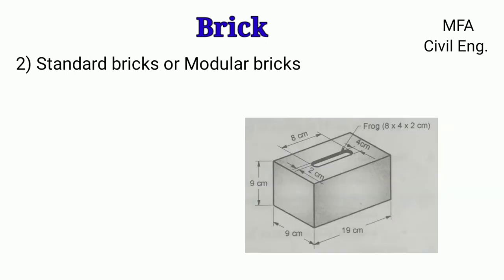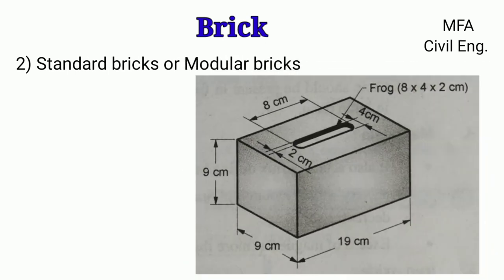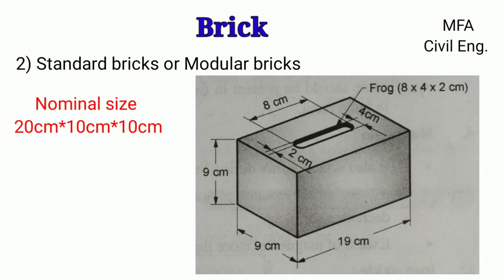Standard brick: In different parts of the country, different sizes of bricks are used. Therefore, to have a uniform size throughout the country, the Indian Standard Institute has suggested a uniform brick size known as the standard brick or modular brick. The nominal size of a modular brick is 20 cm × 10 cm × 10 cm, the actual size is 19 cm × 9 cm × 9 cm, and the frog has a size of 8 cm × 4 cm × 2 cm.